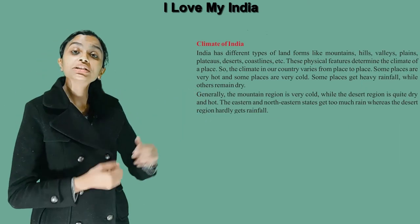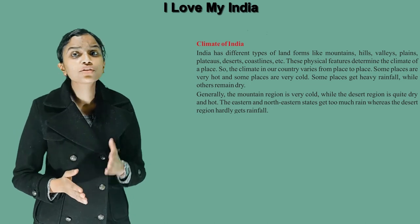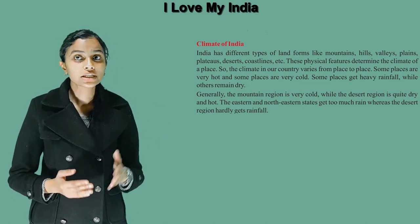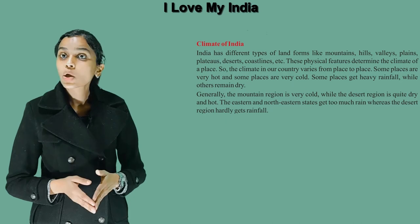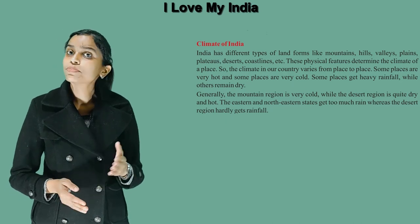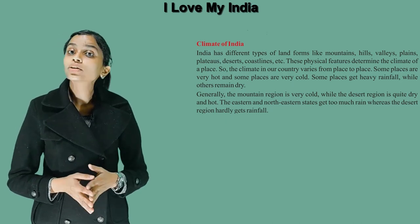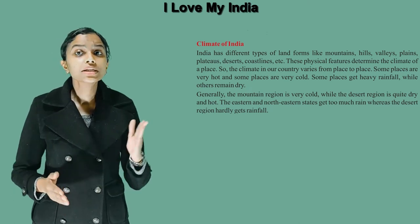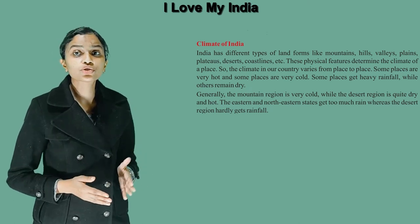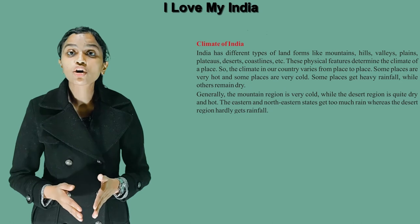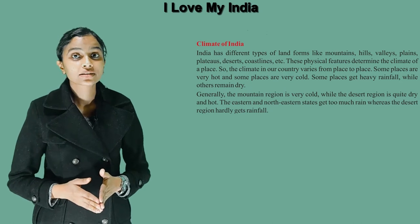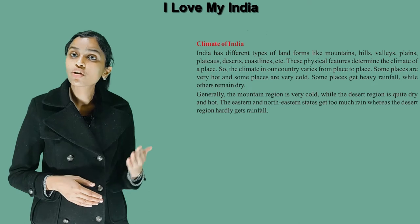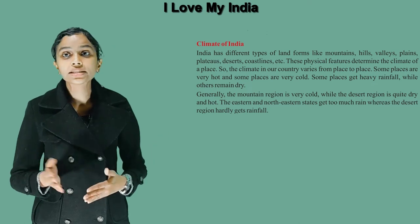Climate of India: India has different types of landforms like mountains, hills, valleys, plains, plateaus, deserts and coastlines. These physical features determine the climate of a place. So the climate in our country varies from place to place.